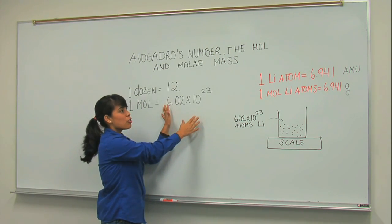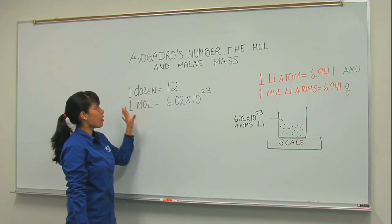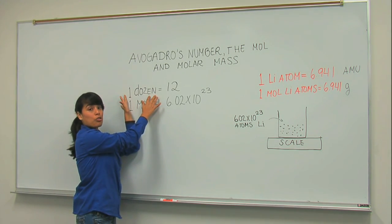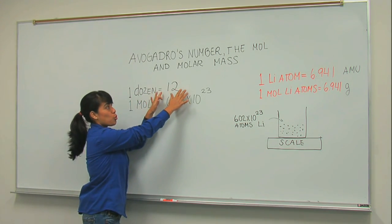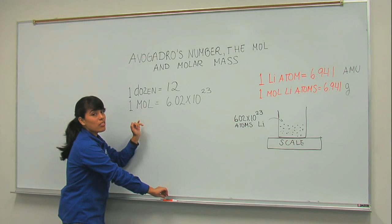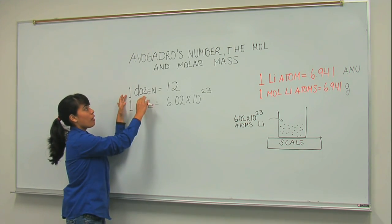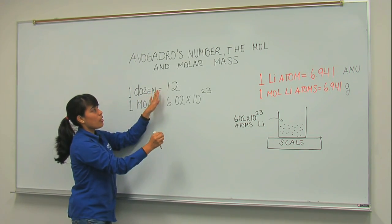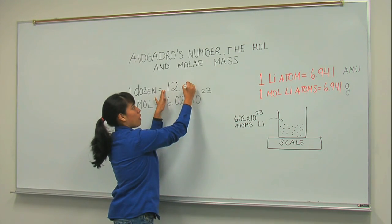So imagine, just like we have a dozen, a term that means 12. If I tell you that I want to earn a dozen of dollars, that means that I want to earn 12 dollars, right?